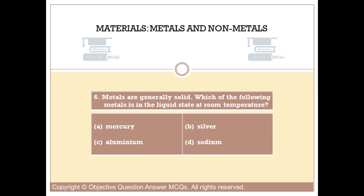Question number six. Metals are generally solid. Which of the following metals is in the liquid state at room temperature? Option A: Mercury. Option B: Silver. Option C: Aluminium. Option D: Sodium.